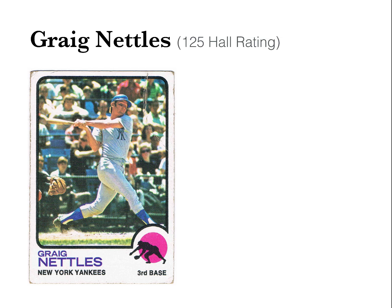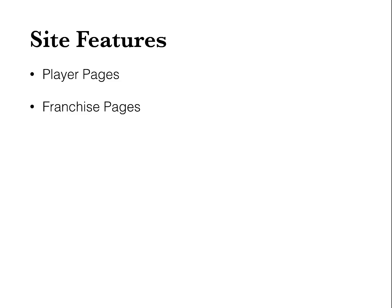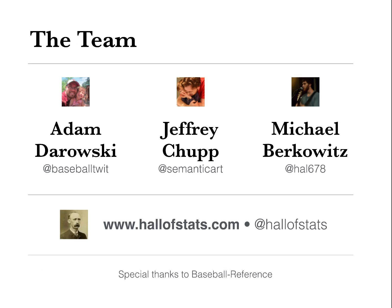So this is the site. At the site, you'll find player pages for every player in history, rankings for all franchises and all positions. You'll find similarity scores based not on raw stats but on these adjusted WAR components. There are articles and new research I've done. The site is optimized for mobile and it's open source, so if you want you can download the code, download the data, and play with it as much as you want. I built this along with Jeffrey Chupp and Michael Berkowitz. Check it out at hallofstats.com. Thank you.